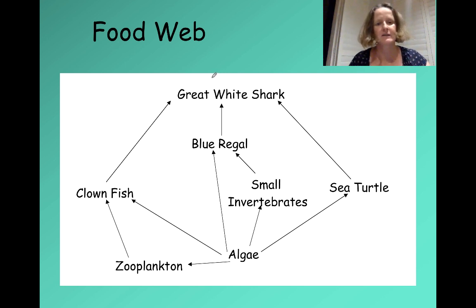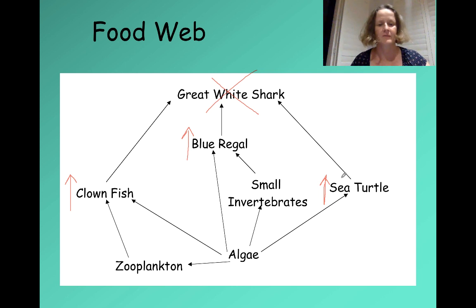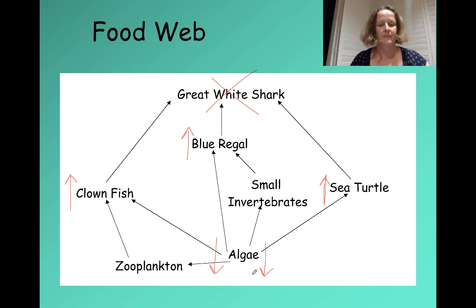Let's look at what happens if we remove the great white shark. If we remove this top carnivore, the number of clownfish will probably go up because nothing's eating them, the number of blue regals will probably go up, and the sea turtles will increase in number as well. But because of these three increases, we'd probably find that the algae numbers decrease because they are being eaten by larger numbers of herbivores.